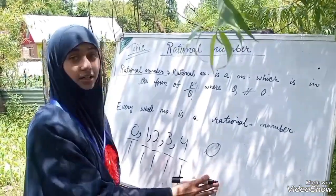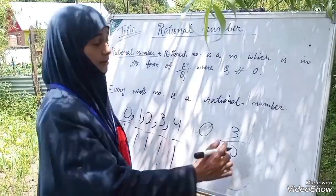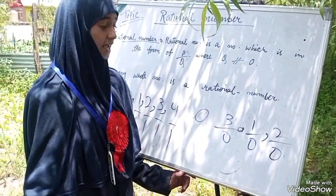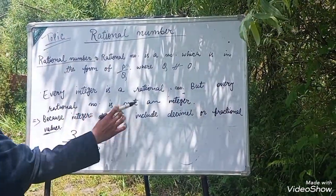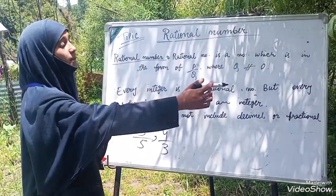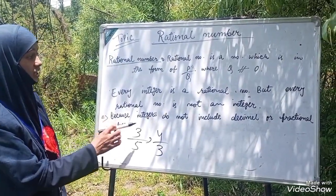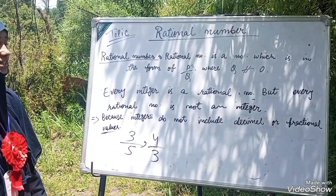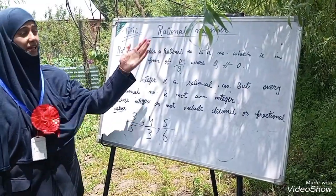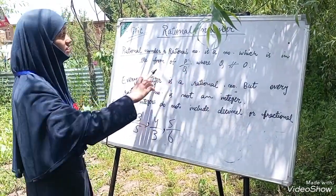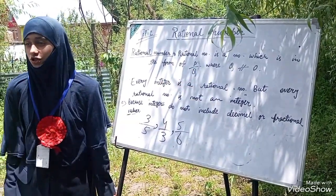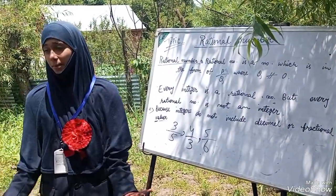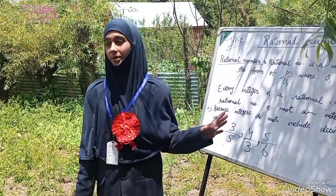But three by zero or one by zero or two by zero — these are not rational numbers. A rational number is a number which is in the form of p by q, where q is not equal to zero. Every natural number is a rational number and every whole number is a rational number. Now you understand what a rational number is. Yes!